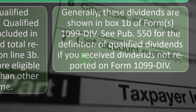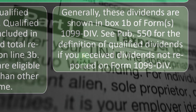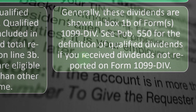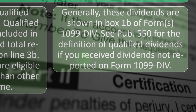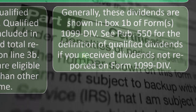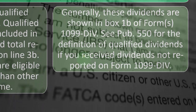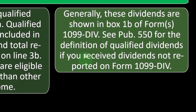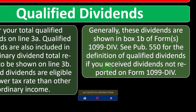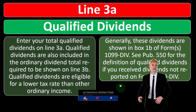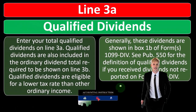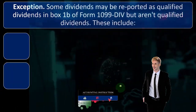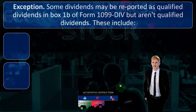Generally, these dividends are shown in box 1B of Form 1099-DIV. See Publication 550 for the definition of qualified dividends if you receive dividends not reported on Form 1099-DIV.